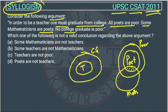Fourth premise: no college graduate is poor. College graduate is here and poor is here. So it means there is no relationship between them — they don't have any relationship.